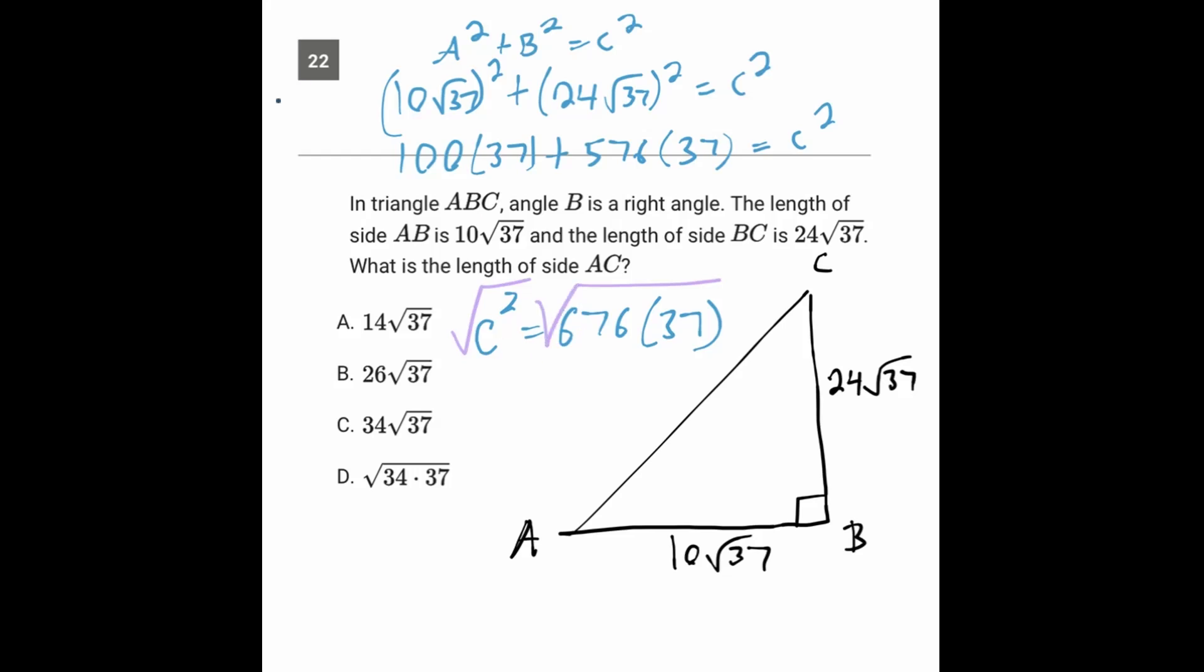Square root of 676 is 26, and we have the square root of 37, which doesn't have a square to it. So 26√37, that's what C is, and that's answer choice B.